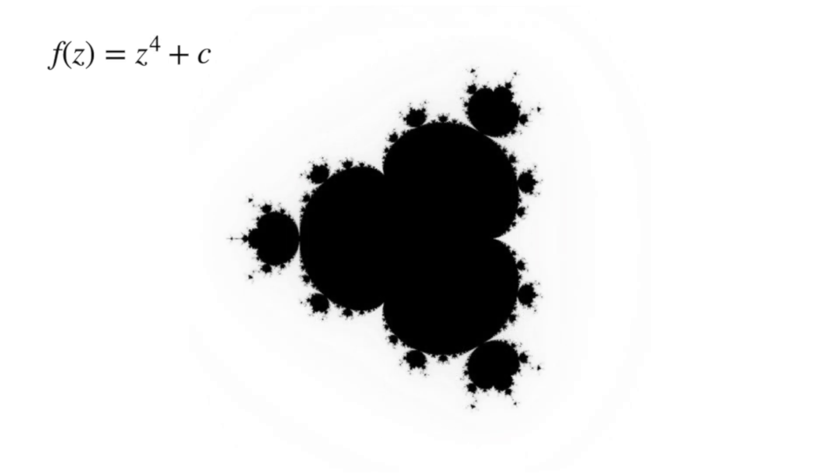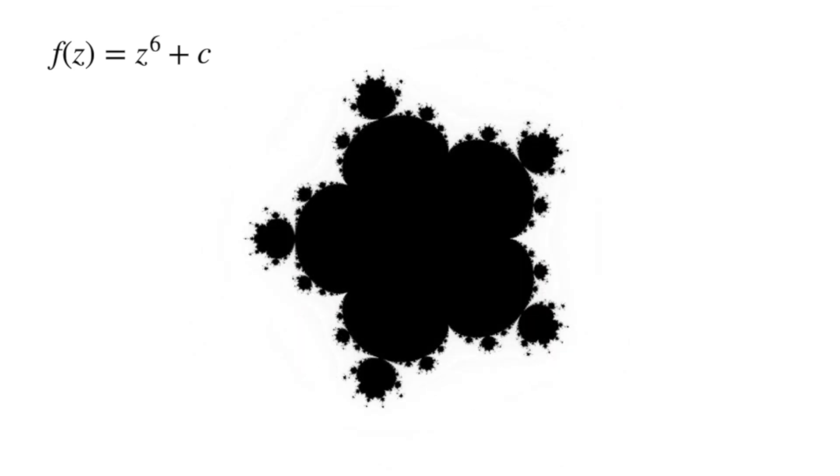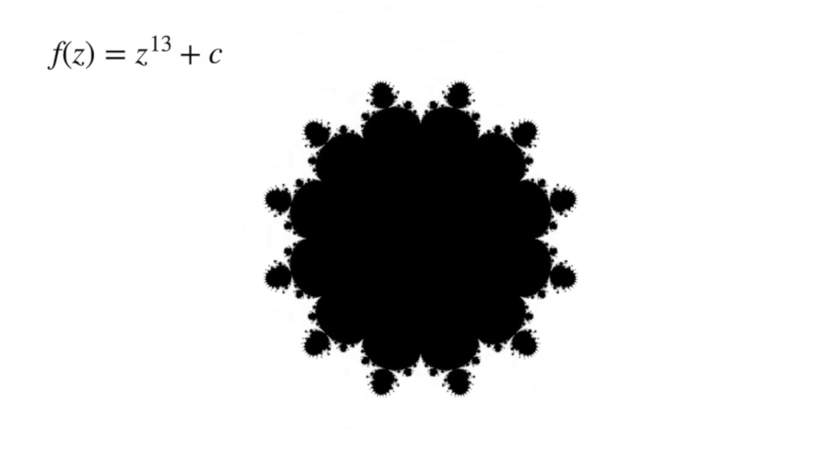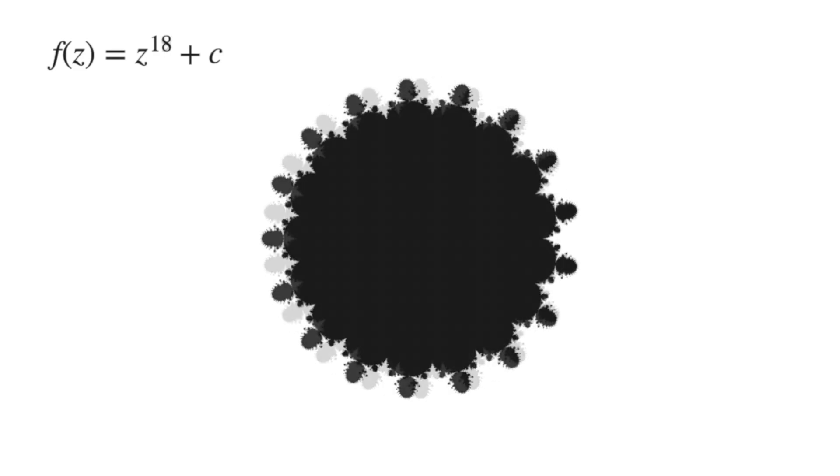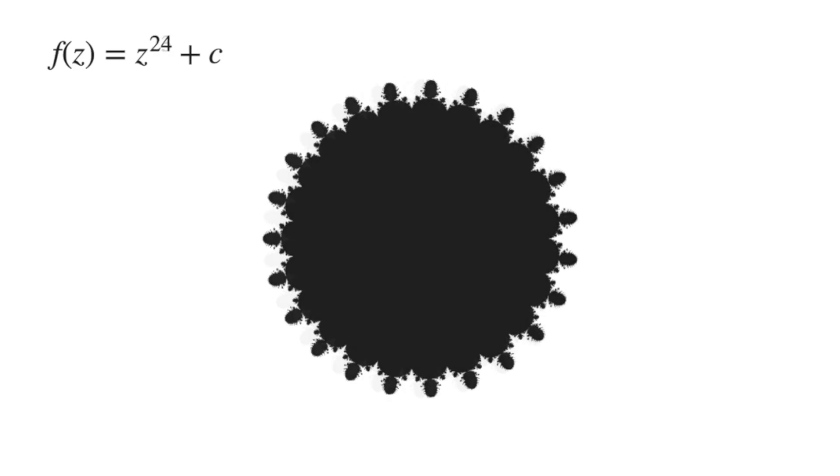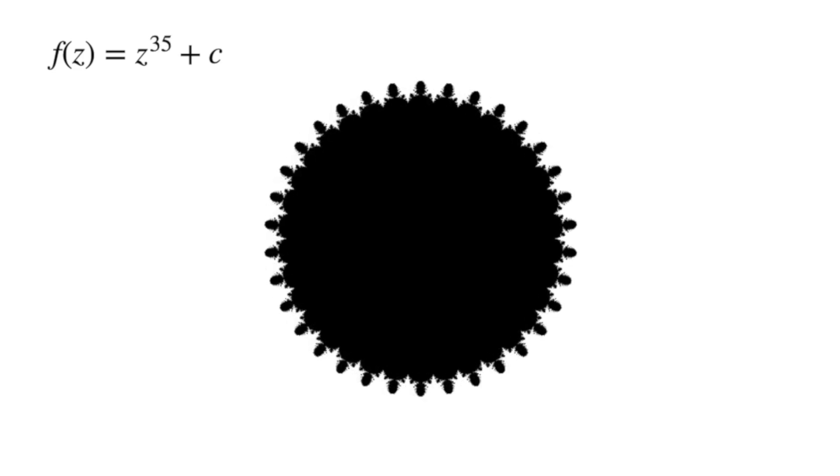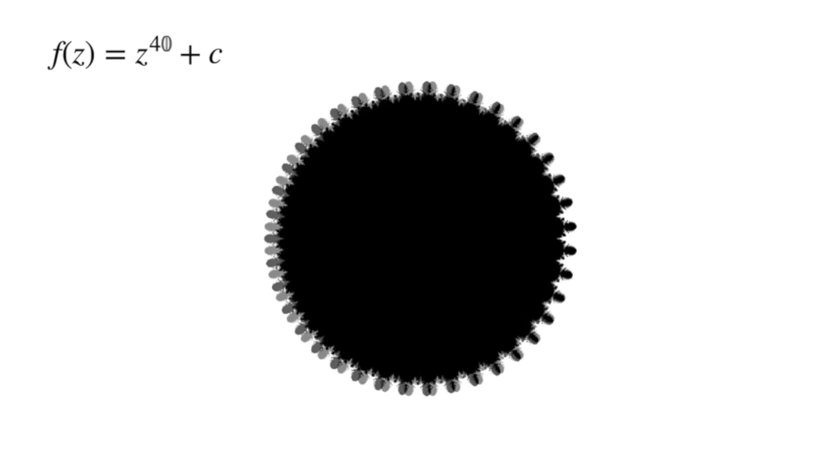If you simply go up by one power each time, similar types of structures continue to emerge, where at each step one additional outer cusp is added. It turns out that all of these structures belong to a set that is a generalization of the Mandelbrot set, and it goes by the name of the multi-brot set.